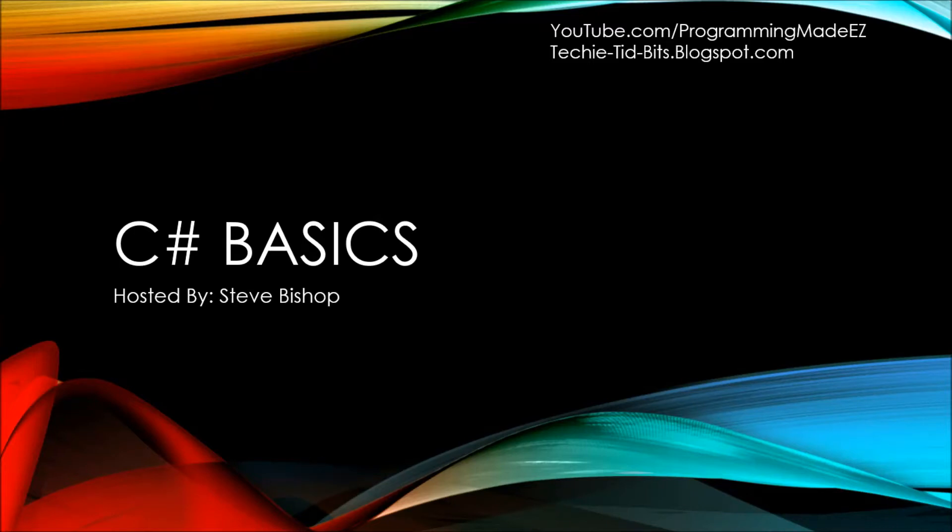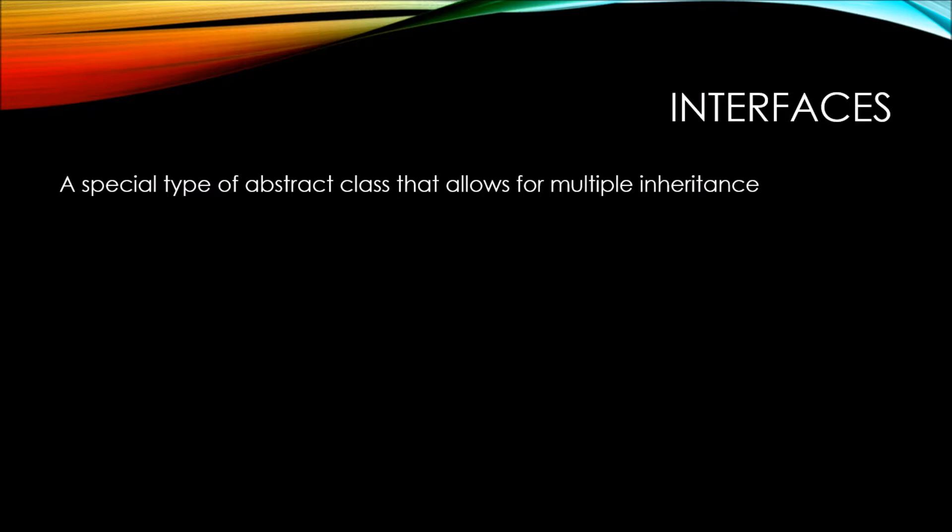In this video on C# basics, let's talk about interfaces. Interfaces are a special type of abstract class that allows for multiple inheritance. One of the main drawbacks of a regular abstract class is that you can only inherit from one class at a time.